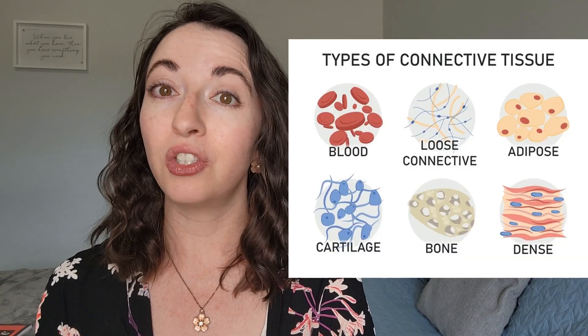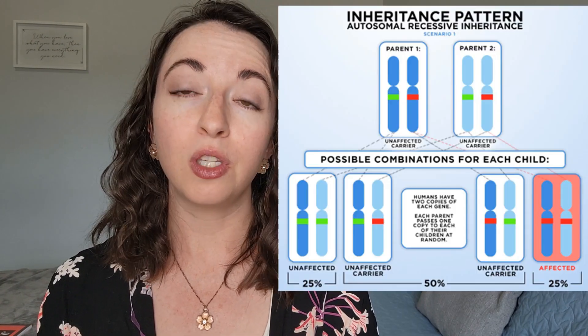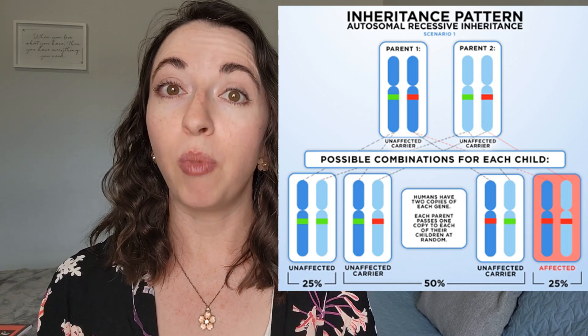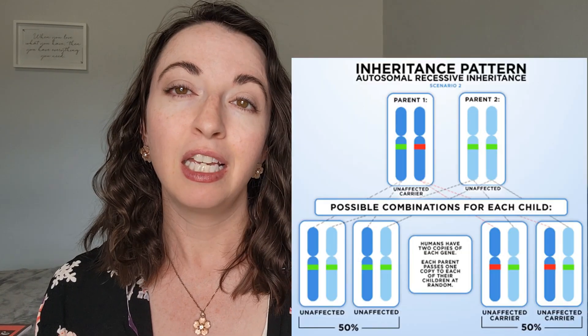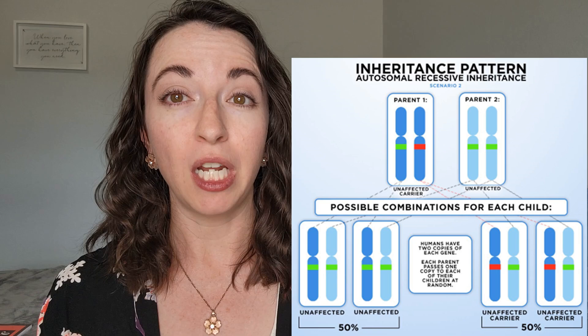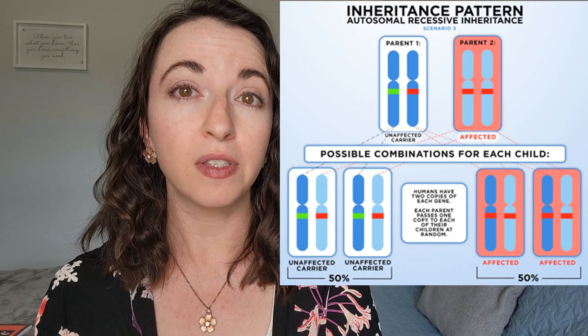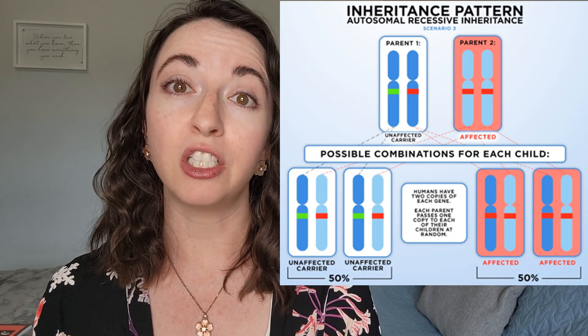KEDS is caused by genetic variants found on the PLOD1 and FKBP14 genes. These genetic variants negatively affect the way the body produces connective tissue, which provides support, protection, and structure throughout the body. Kyphoscolytic EDS is inherited in an autosomal recessive pattern. This means if a person inherits the genetic variant from both of their parents, they will have KEDS. People with only one copy of the genetic variant are carriers of KEDS, and carriers do not have the disorder themselves, but they may pass the genetic variant onto their children.